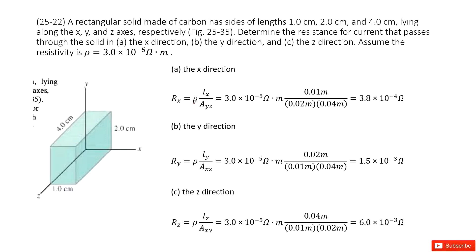Chapter 25 is about electric current and resistance. You can see we have a solid object. The side length is given in the picture. Now the resistivity is also given. We need to find the resistance for current that passes through this object in x, y, z directions.